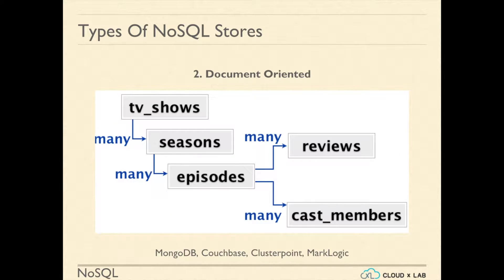The second kind is document-oriented NoSQL data stores. In such data stores, we can store complex objects. For example, we can store TV shows where each record will represent a TV show. The TV show is a complex object, or we can say a document. A TV show has many seasons, each season has many episodes, and every episode has many reviews and cast members. Examples of document-oriented NoSQL data stores are MongoDB, CouchDB, ClusterPoint, and MarkLogic.